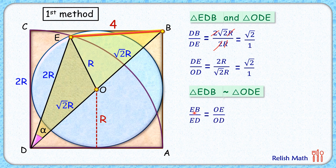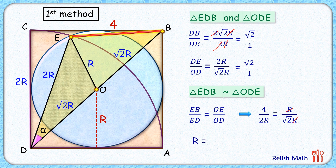Since the triangles are similar, the ratio of sides will be equal: EB upon ED equals OE upon OD. Putting in the values: EB is 4 (given), ED is 2r, OE is r, and OD is root 2r. Simplifying, r cancels down, and solving gives r equals 2 root 2 centimeters. That's our answer for the first method.